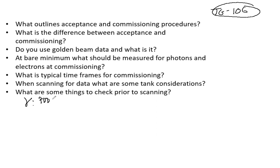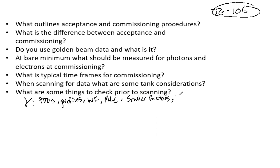At bare minimum for photons, you need percent depth doses, beam profiles (both inline and crossline), and wedge factors. You can think about what you'd need for an MU check for a photon field. You also need MLC data, including leakage, penumbra, how many MLCs you have, and the DLG. Scatter factors are also important, as are tray factors.